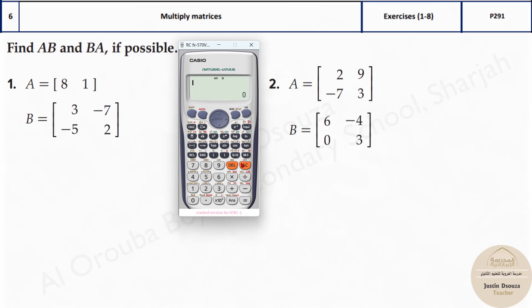Now both the matrices are saved and all you need to do is multiply. You have to multiply AB and BA if possible right. So let's press shift 4 and type 3, that is matrix A, multiply by multiplication symbol, and now again matrix B, that is shift 4 and option 4.